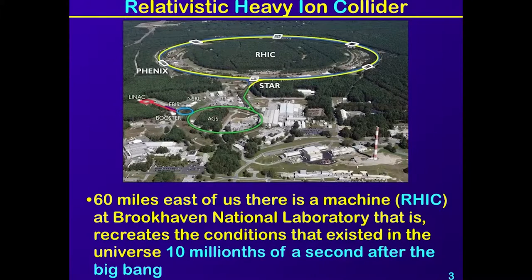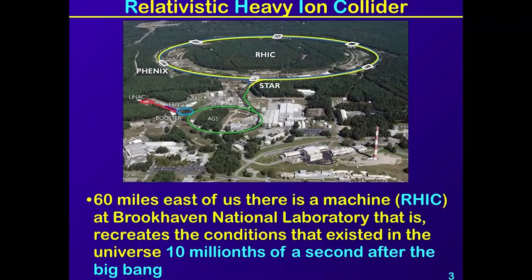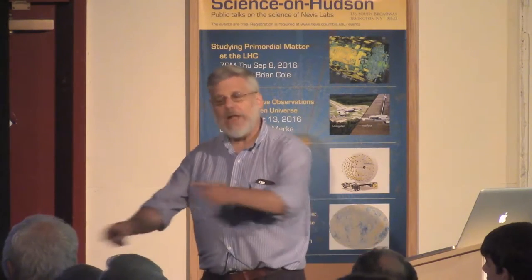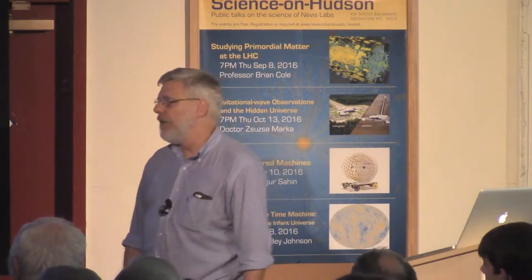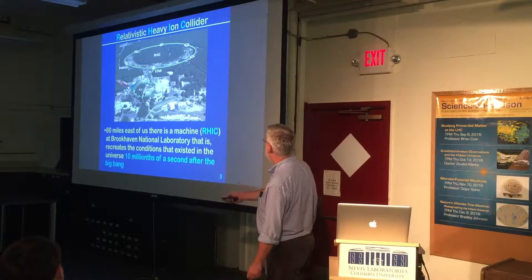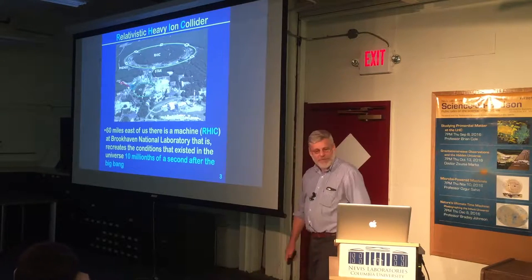To set the context: this is work I started many years ago. Sixty miles east of us there is a machine at Brookhaven National Laboratory on Long Island — exit 68 on the LIE for those who have driven out there. It's a complex of accelerators, the last of which is a collider that can accelerate and collide beams of nuclei — protons, deuterium, helium, all the way up to uranium — and it recreates the conditions that existed in the early universe about ten millionths of a second after the Big Bang.